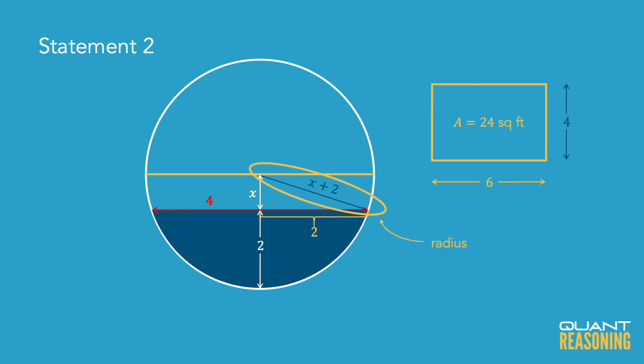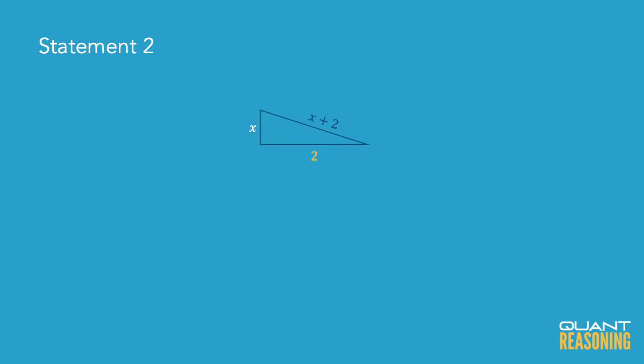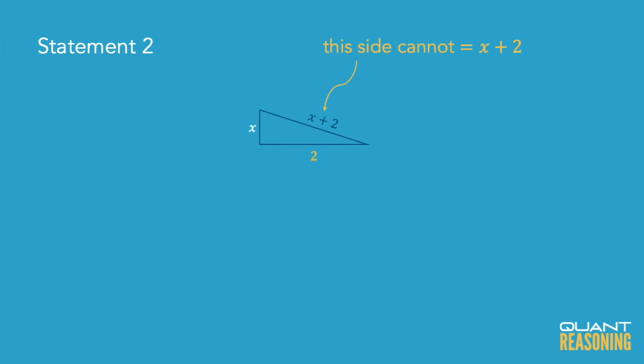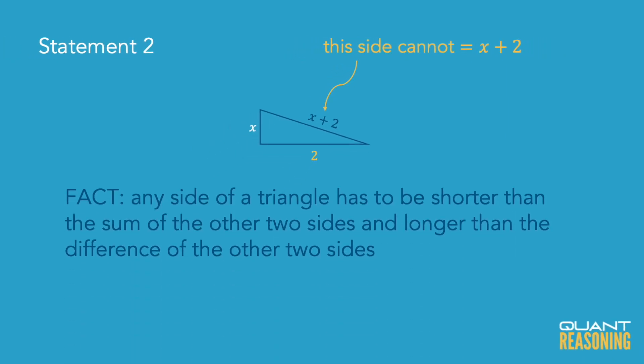But then what we end up with is a triangle whose sides are x, 2, and x plus 2. But the side of a triangle is never going to be equal to the sum of the other two sides. In fact, there's a rule that says that any side of any triangle has to be shorter than the sum of the other two sides and longer than the difference of the other two sides.